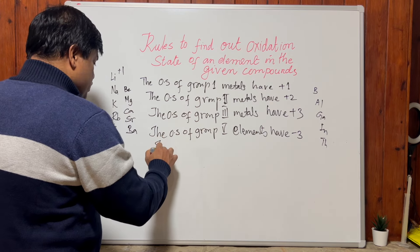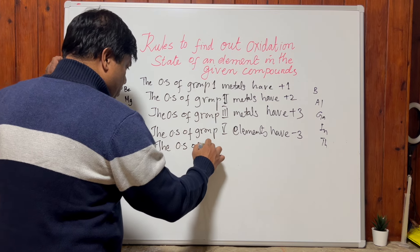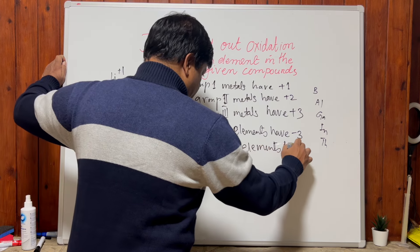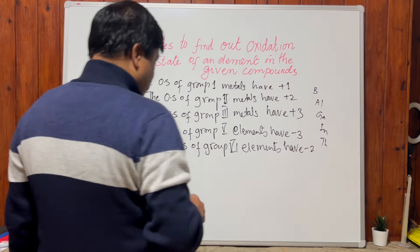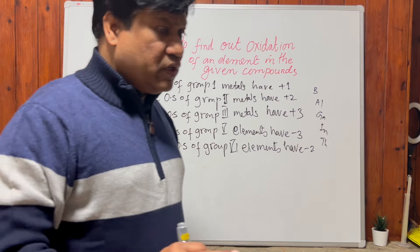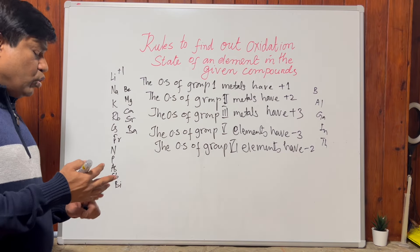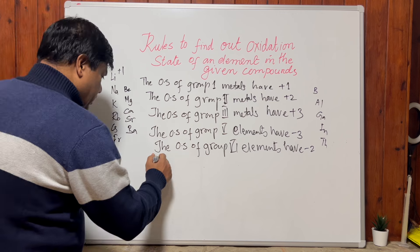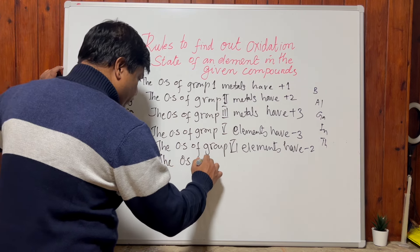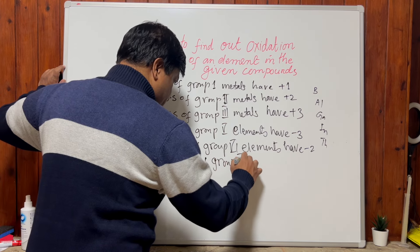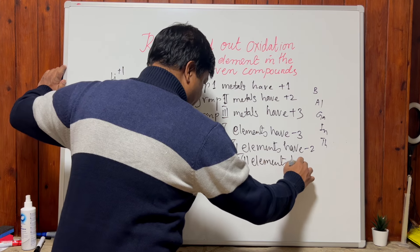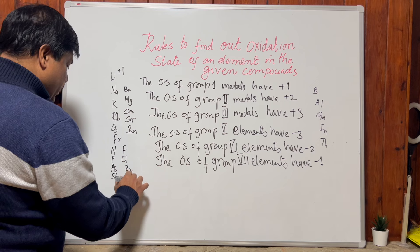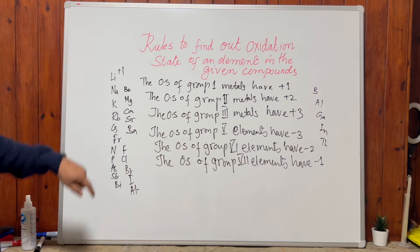Group 6 elements have a minus two oxidation state. Oxygen mostly shows a minus two oxidation state, except in OF2 and H2O2 hydrogen peroxide — I'll explain the reason behind that. Group 7 elements — fluorine, chlorine, bromine, iodine — have a minus one oxidation state because they gain one electron. Please quickly copy this down.